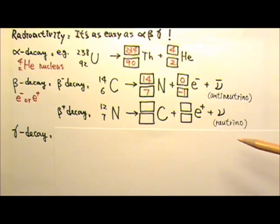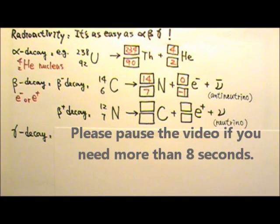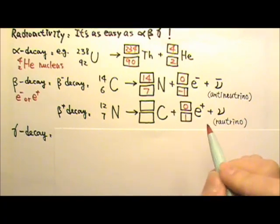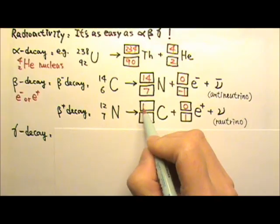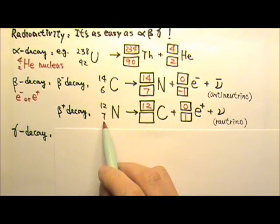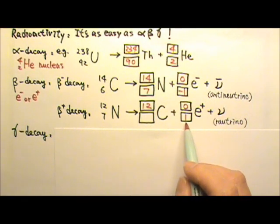Now see if you can balance this positive beta decay equation. We can put zero one over here. So twelve equals to this plus zero, it must be twelve over here. Seven equals to this plus one, so this must be six.